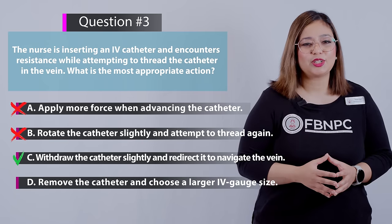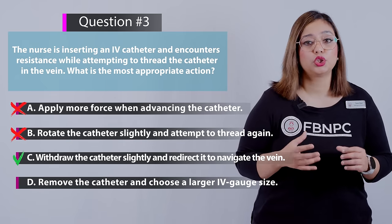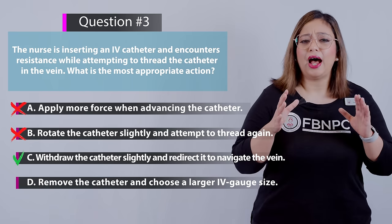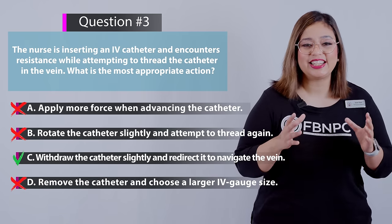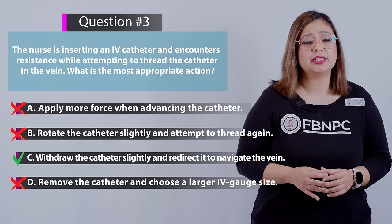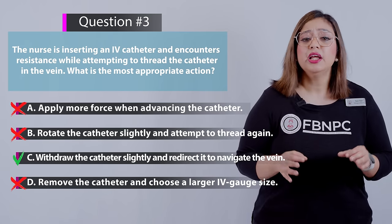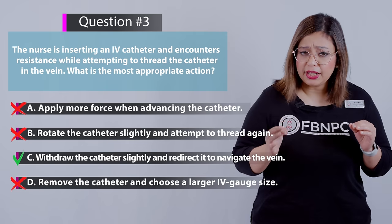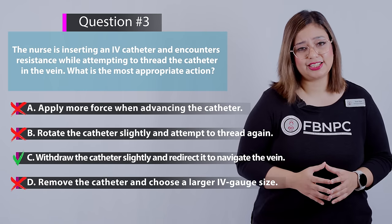Option D: Remove the catheter and choose a larger IV gauge size — incorrect. This action should only be considered if the catheter size is inappropriate for the client's vein and if redirection has been unsuccessful.